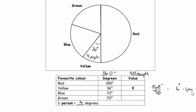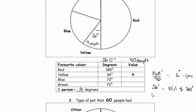Tabitha points out that 36 degrees is 10% of 360 degrees, and therefore that has to be 10% of 90. What's 10% of 90? 9. So 10% of 90 is 9 people. Very good.